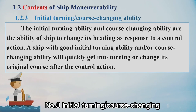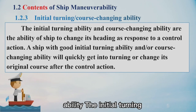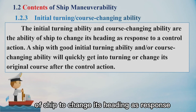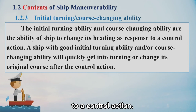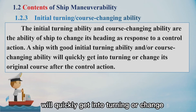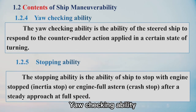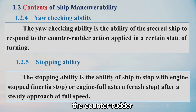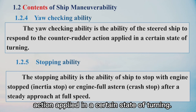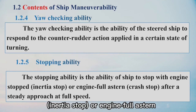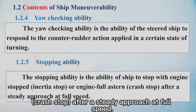Number three: initial turning and course-change ability. The initial turning ability and course-change ability are the ability of a ship to change its heading as a response to control action. A ship with good initial turning ability will quickly get into a turn or return to its original course after the control action. Stopping ability is the ability of a ship to stop with engine stop, inertia stop, or engine full astern crash stop after a steady approach at full speed.